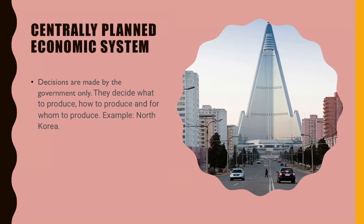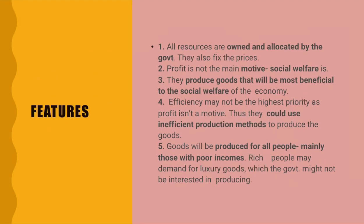A centrally planned economic system is when decisions are made by the government only — they decide what to produce, how to produce, and for whom to produce. An example is North Korea. Features include: all resources are owned and allocated by the government; they fix prices too; profit is not the main motive — social welfare is; and they produce goods most beneficial to social welfare, like merit goods. Efficiency is not a priority.